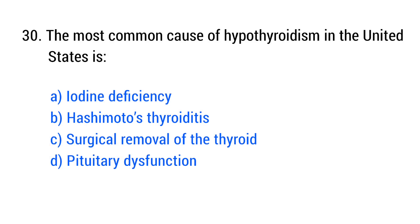Question number 30. The most common cause of hypothyroidism in the United States is? The right answer is option B: Hashimoto's thyroiditis.